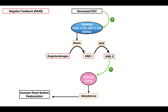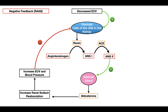Aldosterone increases renal sodium reabsorption in the kidney, and water follows sodium. This increases the effective circulating volume and blood pressure. This increase in effective circulating volume and blood pressure then inhibits the granular cells of the juxtaglomerular apparatus from releasing renin, decreasing the conversion of angiotensinogen into angiotensin 1, decreasing angiotensin 2, and therefore decreasing the stimulation of the adrenal gland and reducing aldosterone release. This is the first negative feedback in this system.